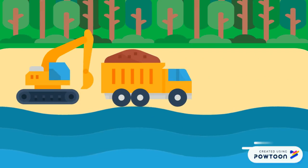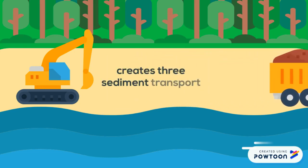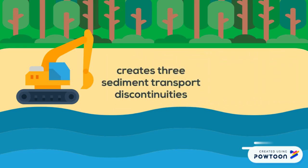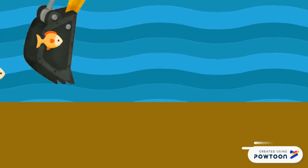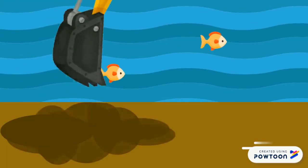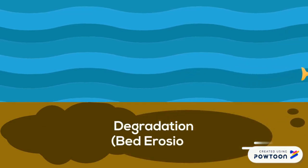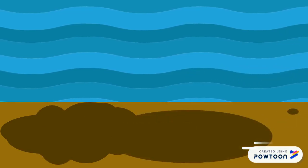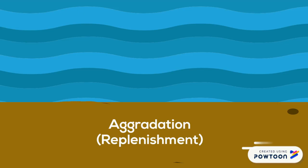The removal of sand and gravel in river systems through excavation in the riverbed creates three sediment transport discontinuities. Degradation and aggradation are feedback mechanisms operating to remove sediment transport discontinuities created by the extraction.